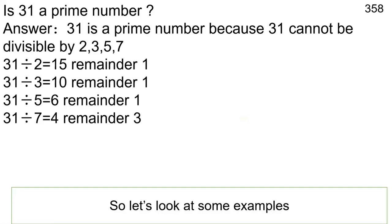Answer: 31 is a prime number because 31 cannot be divisible by 2, 3, 5, 7. 31 divided by 2 is equal to 15 remainder 1. 31 divided by 3 is equal to 10 remainder 1. 31 divided by 5 is equal to 6 remainder 1. 31 divided by 7 is equal to 4 remainder 3.